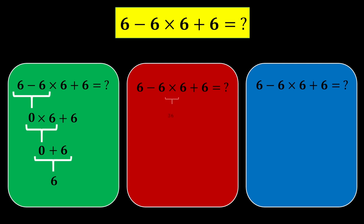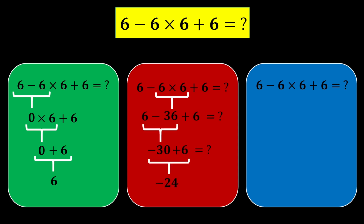reaching the answer 6. The second person first calculates 6 times 6, which becomes 36, and the expression turns into 6 minus 36 plus 6. Then they calculate 6 minus 36, which becomes negative 30. Finally, they calculate negative 30 plus 6, reaching the final answer negative 24.